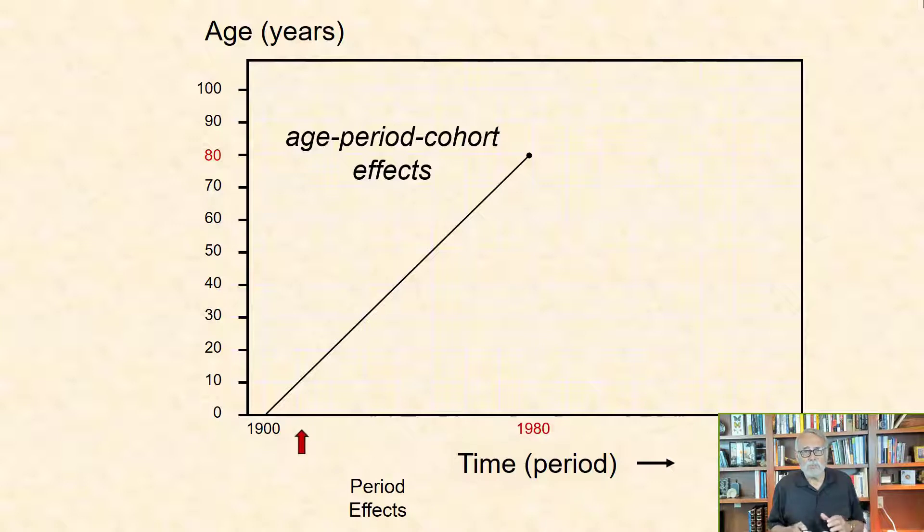Period or historical events affect all age groups at once, although different ages often react differently. For example, the mortality response to epidemics, famines, and wars of the very young and the very old are often much greater than the response of middle-aged persons.